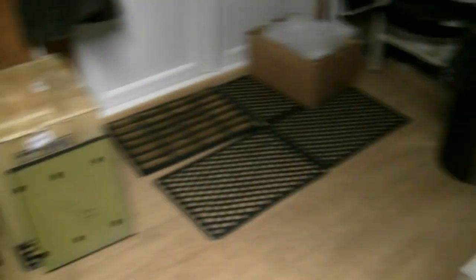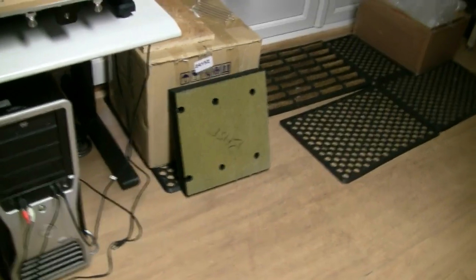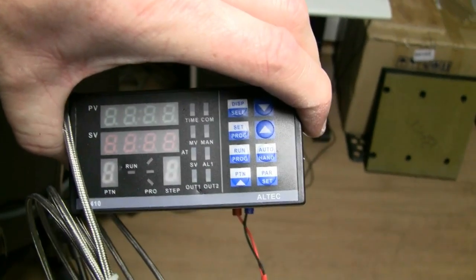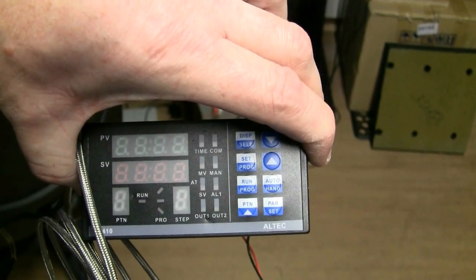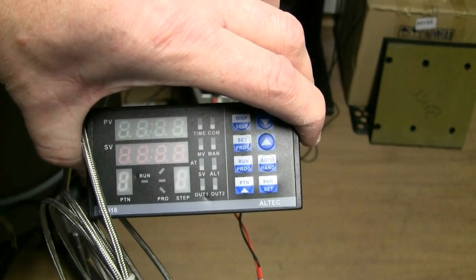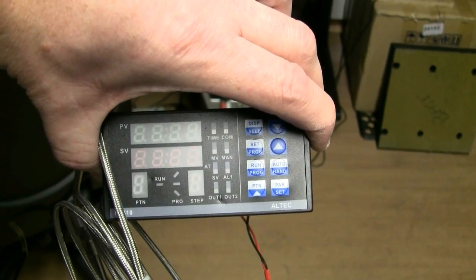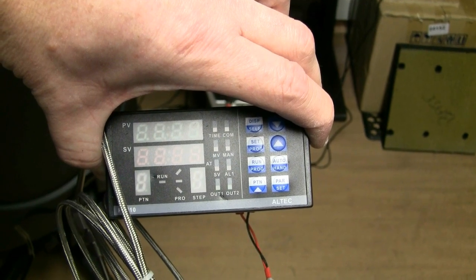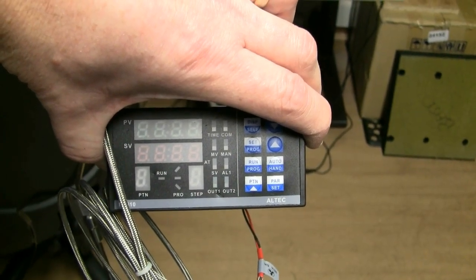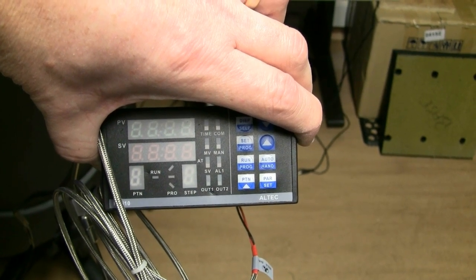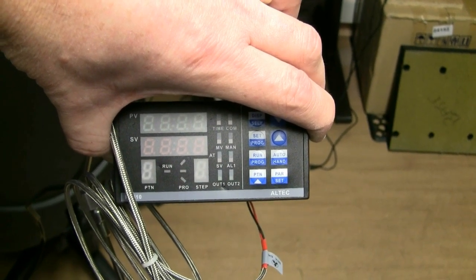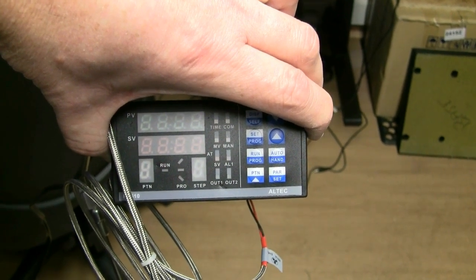The controller, there we go. This is an Altec PC410 multi-channel multi-sequence PID based temperature controller. You can have up to ten programs, each eight segments long with a programmable ramp set point and dwell time. That's quite neat, it pretty much does everything I think you need to do. It also has a self calibration or a learning mode.